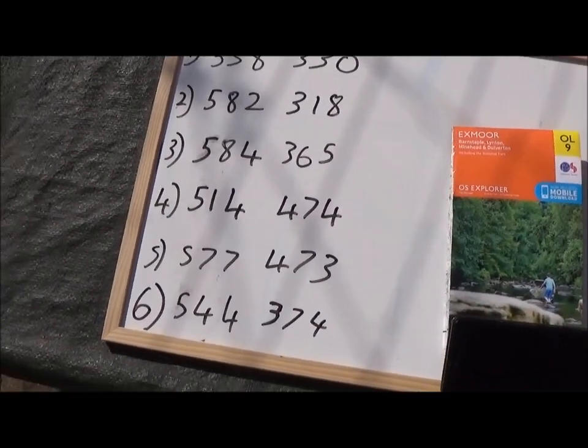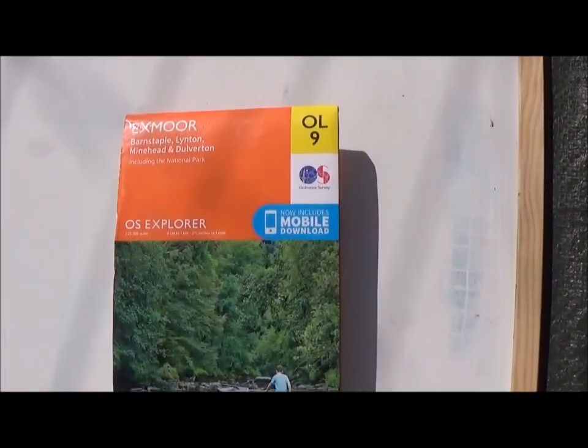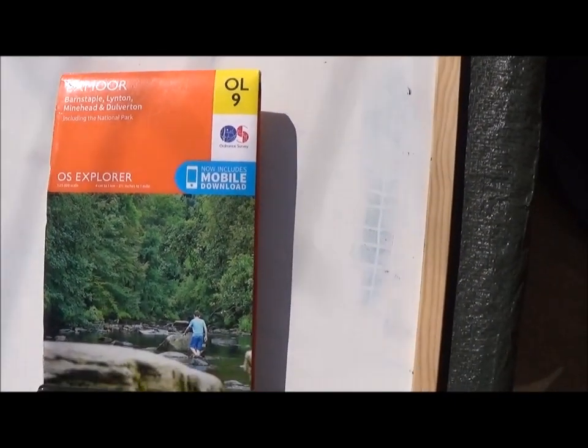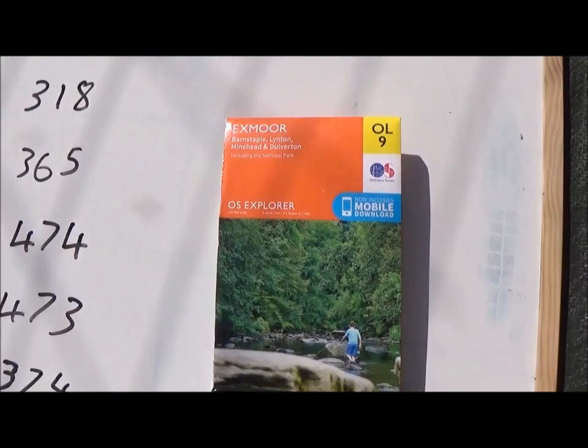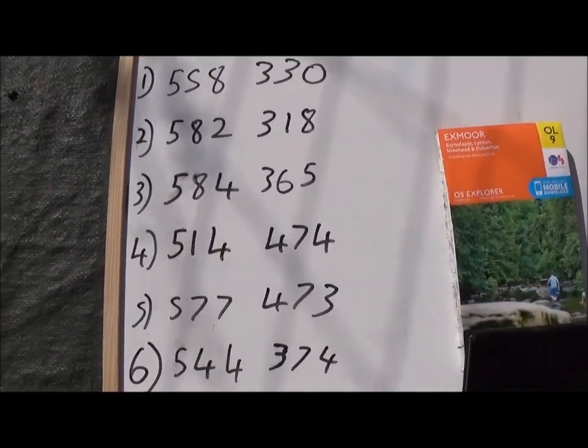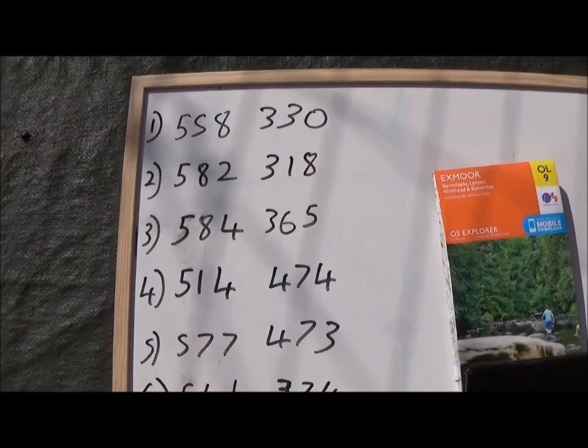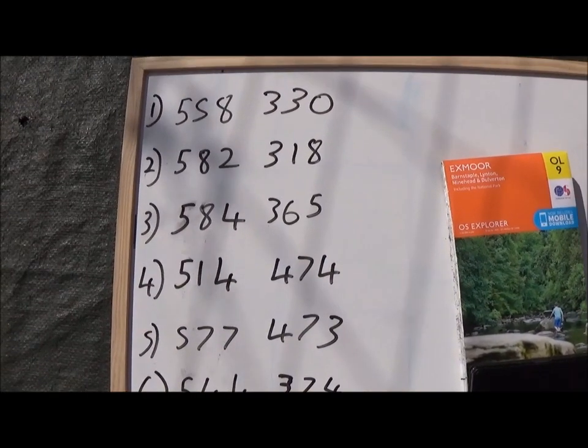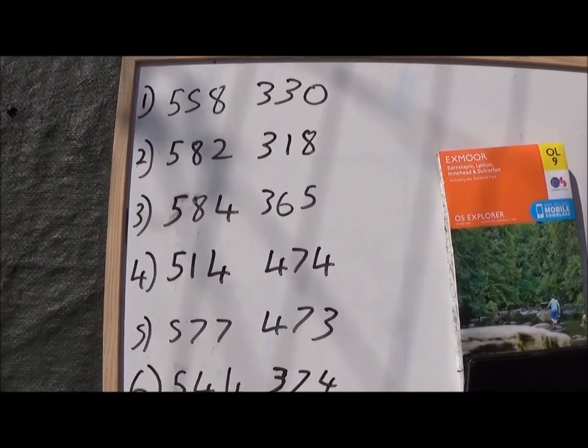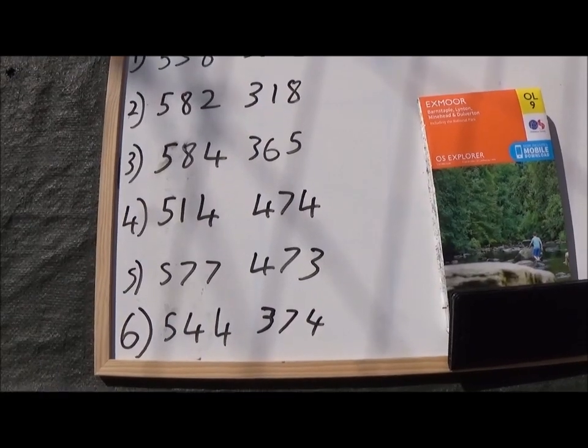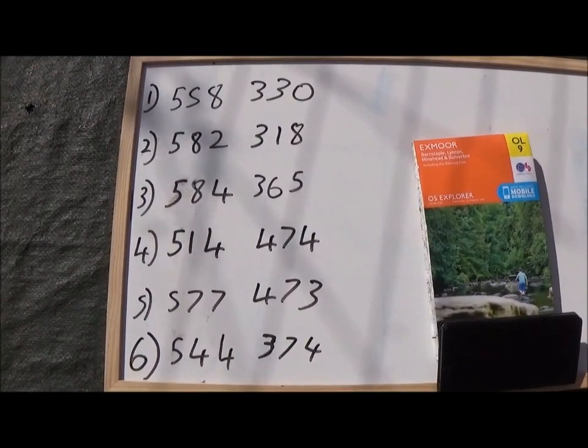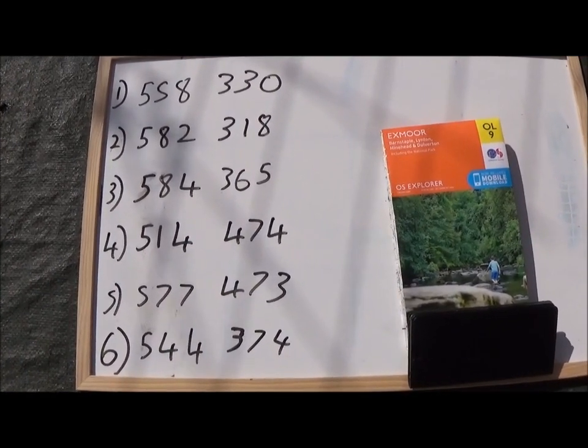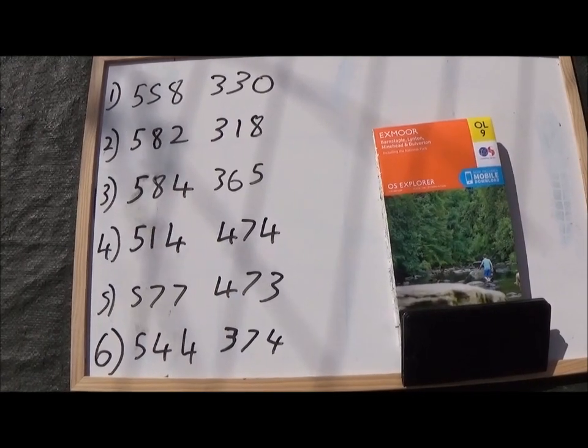So guys, I've got a little challenge for you. If you have the Exmoor 9 map, Barnstaple, Linton, Minehead, Tiverton, and you have it on the Barnstaple Ilfracombe side, see if you can find these grid references for me. And see what you find. Make sure you look at your key to know what the symbols are. And have a go at home. See if you can find out what's at those locations. And then afterwards, why not get a member of your family to set you some, and then see what you can find.